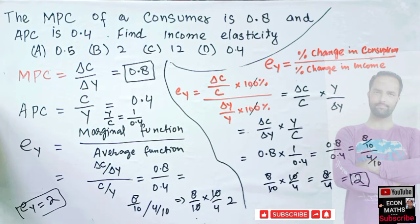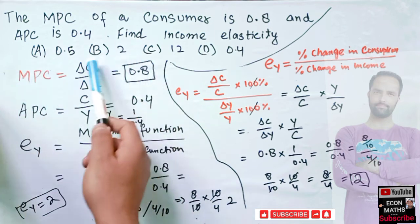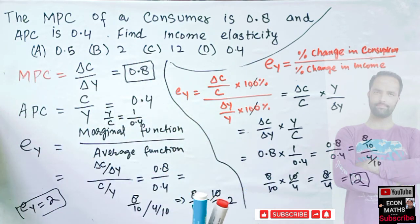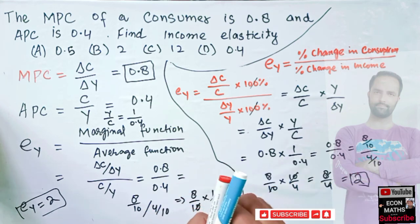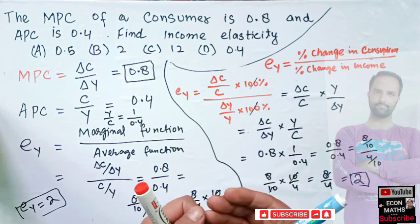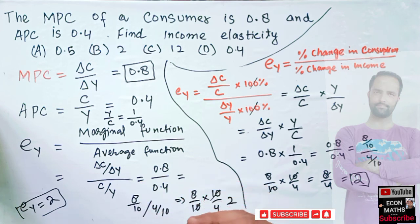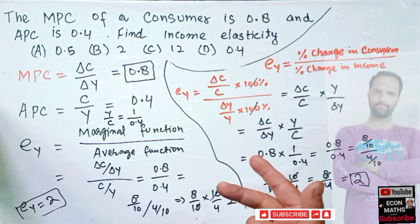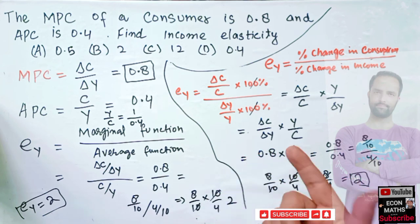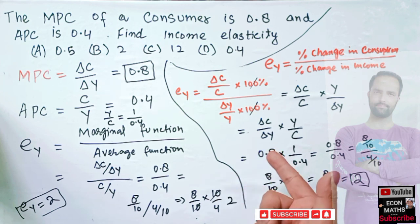Either way — using marginal function upon average function, or using the conventional income elasticity formula — you get income elasticity equal to 2. I hope I've made myself clear in this video. There was a mistake in the earlier video, which is why I made this rectification. I'm just a student of economics, so mistakes can happen — I appreciate when viewers point them out. I'd like to thank the viewer who corrected me and prompted me to make this video.